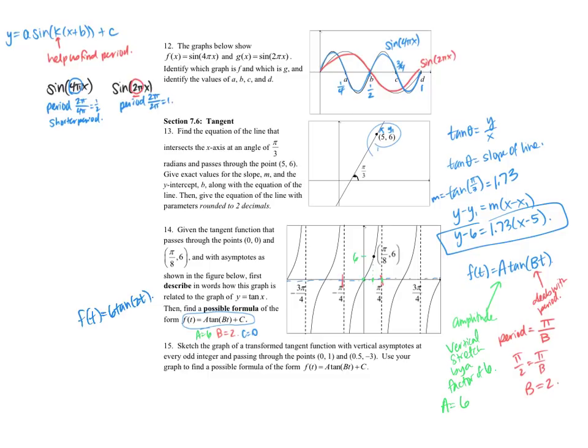All right, last one. Sketch the graph of a transformed tangent function with vertical asymptotes at every odd integer and passing through the points given here. Use your graph to find a possible formula of this tangent function. So it needs asymptotes at every odd integer, so I'll draw some asymptotes.